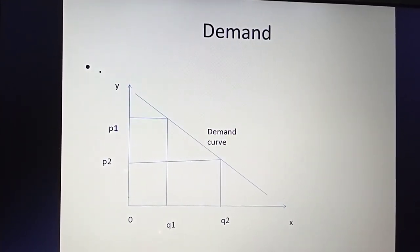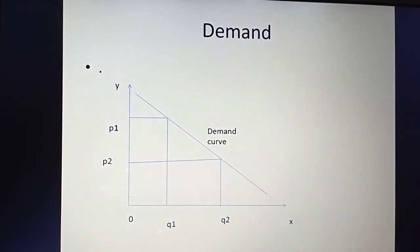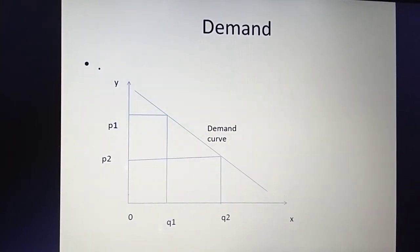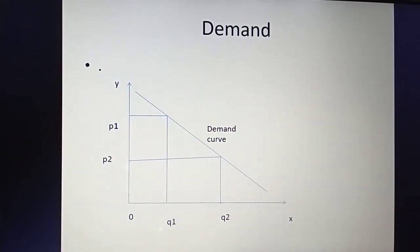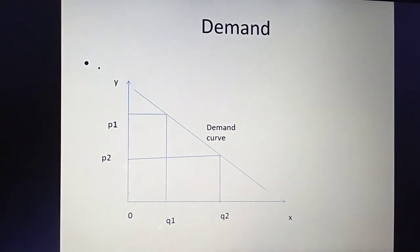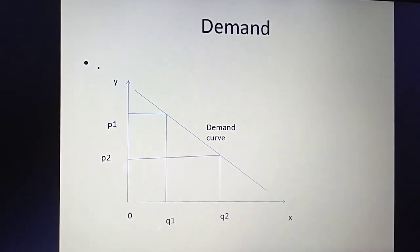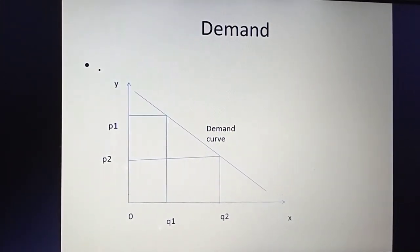The demand curve is formed with the help of various combinations of the price of a commodity and the respective quantities available at that particular price. From this diagram we can see that the demand curve is a downward sloping curve. The basic reason for this downward sloping curve is the opposite relationship between price and quantity demanded of that particular commodity.